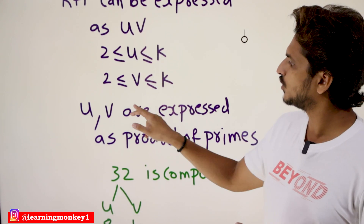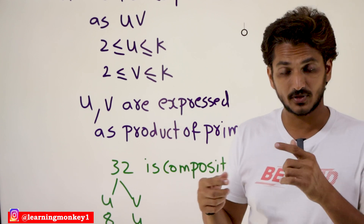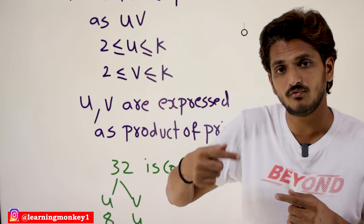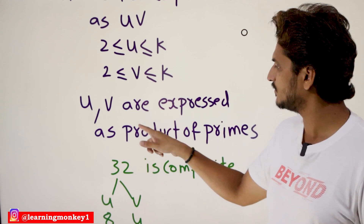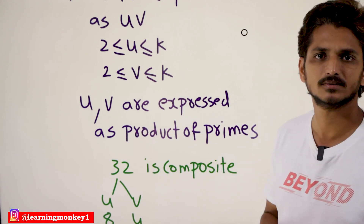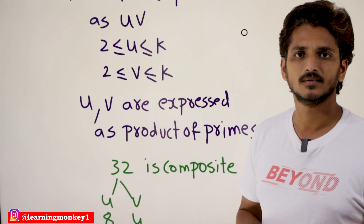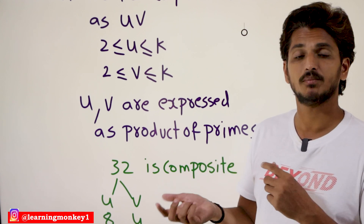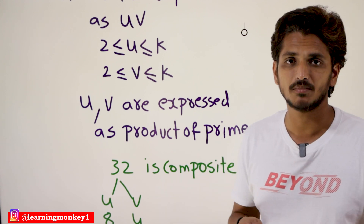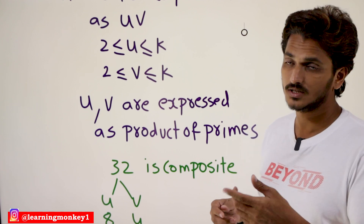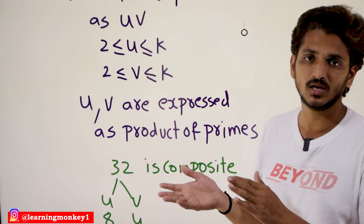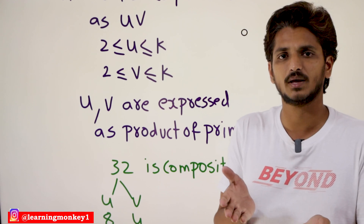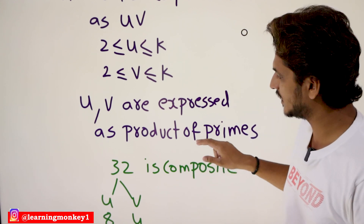From mathematical induction, u and v are previous numbers that have already been expressed as a product of prime numbers. So you can take any number — that number can be expressed as a product of prime numbers, because it can be expressed as u × v, and u and v are already expressed as a product of prime numbers. With an example you will get clarity.